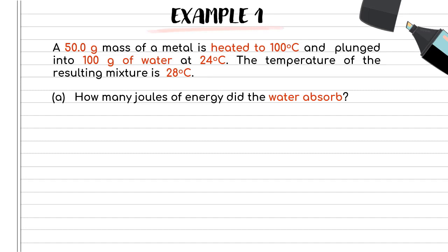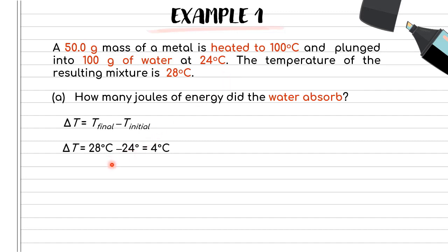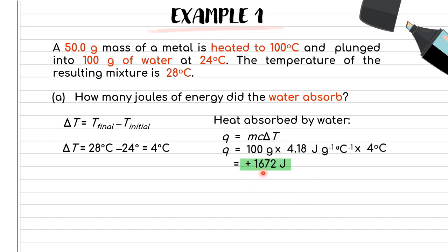Let's try Example 1. A 50 gram mass of a metal is heated to 100°C and plunged into 100 grams of water at 24°C. The temperature of the resulting mixture is now 28°C — this is T_final, and 24°C is T_initial. We need to find how many joules of energy the water absorbed. Focusing on the water, with mass 100 g, specific heat capacity 4.18 J/g°C, and ΔT = 28 − 24 = 4°C, substituting into Q = mcΔT gives +1672 J. The positive sign indicates heat is absorbed.